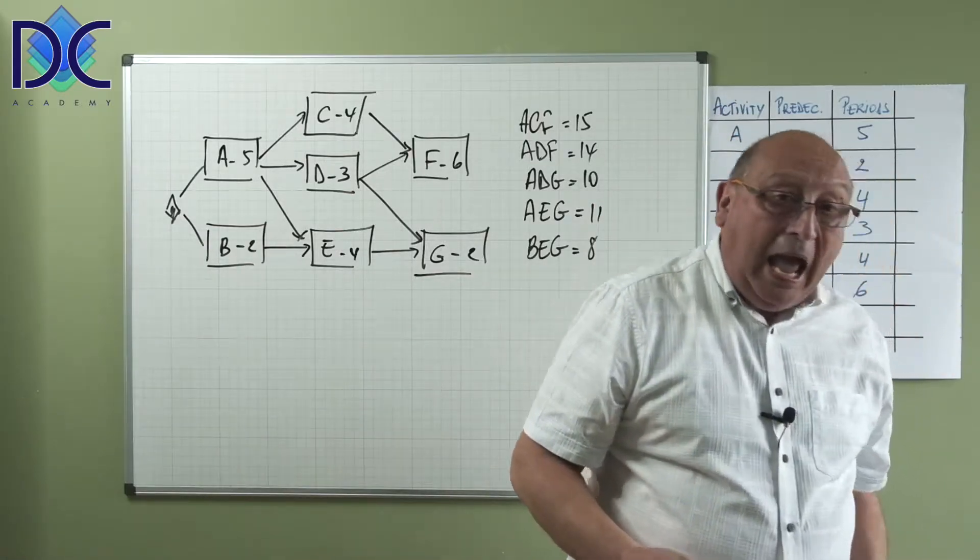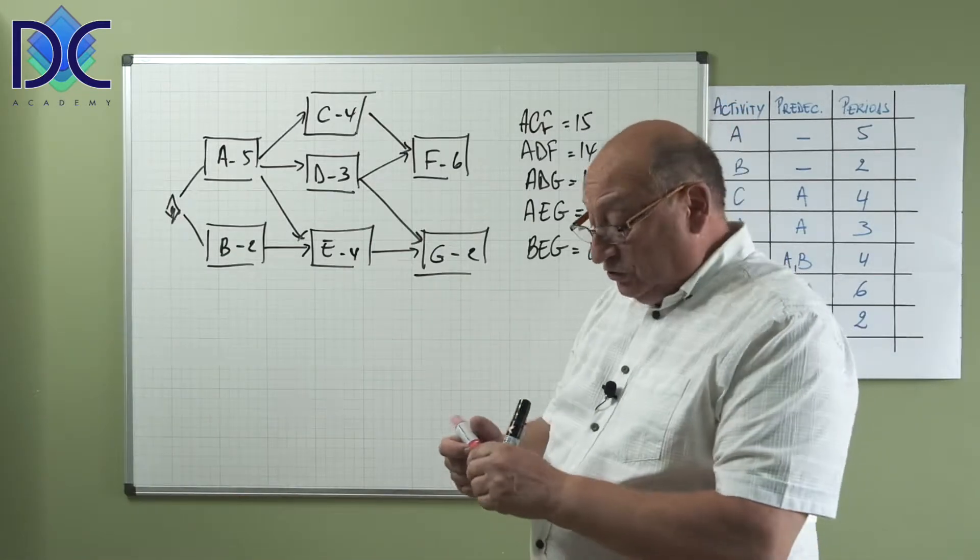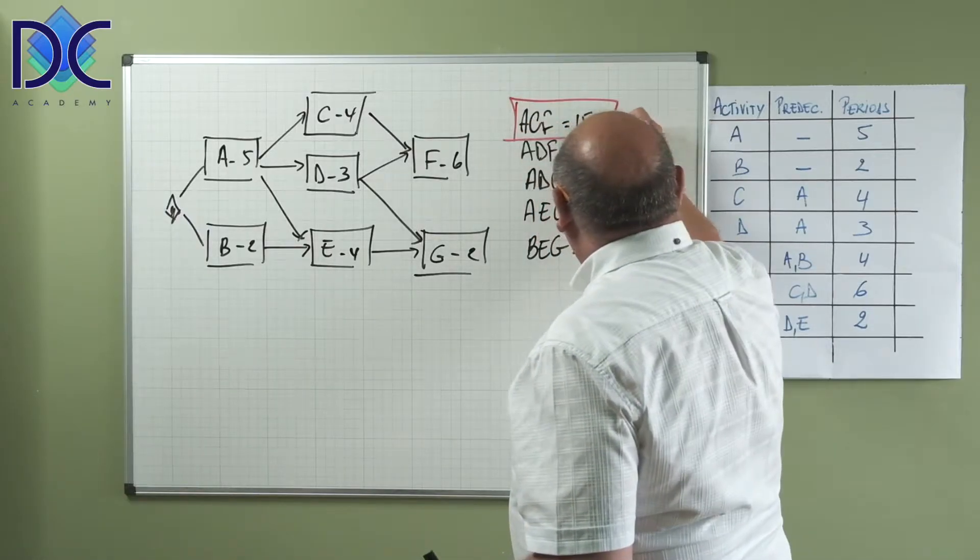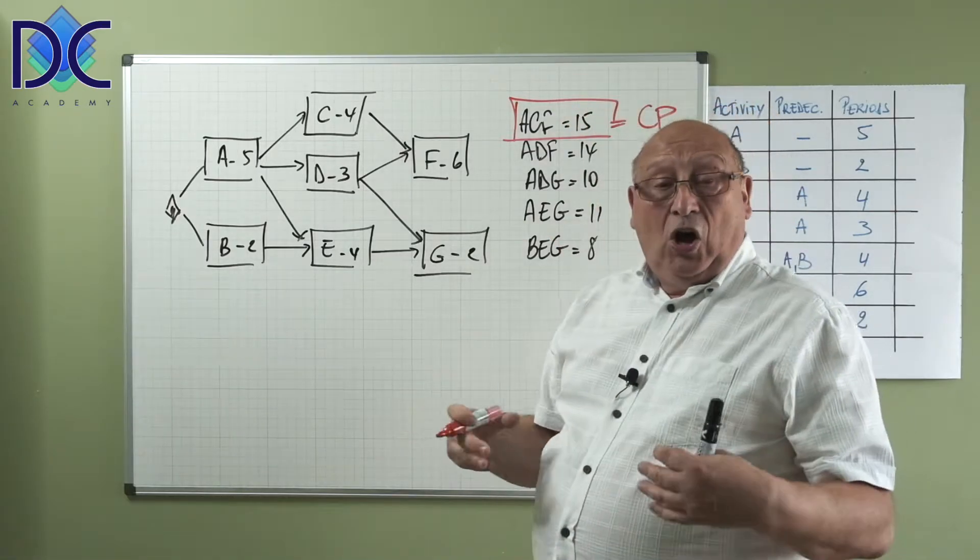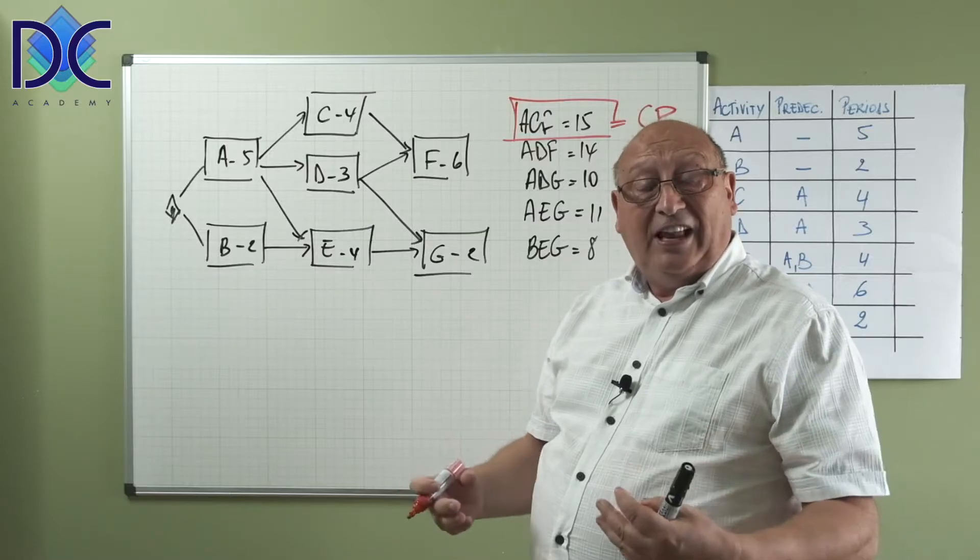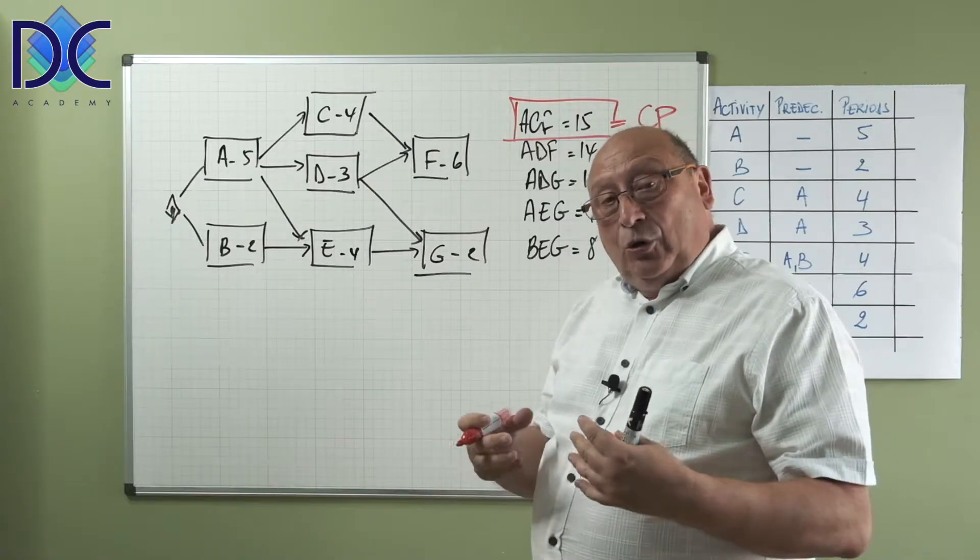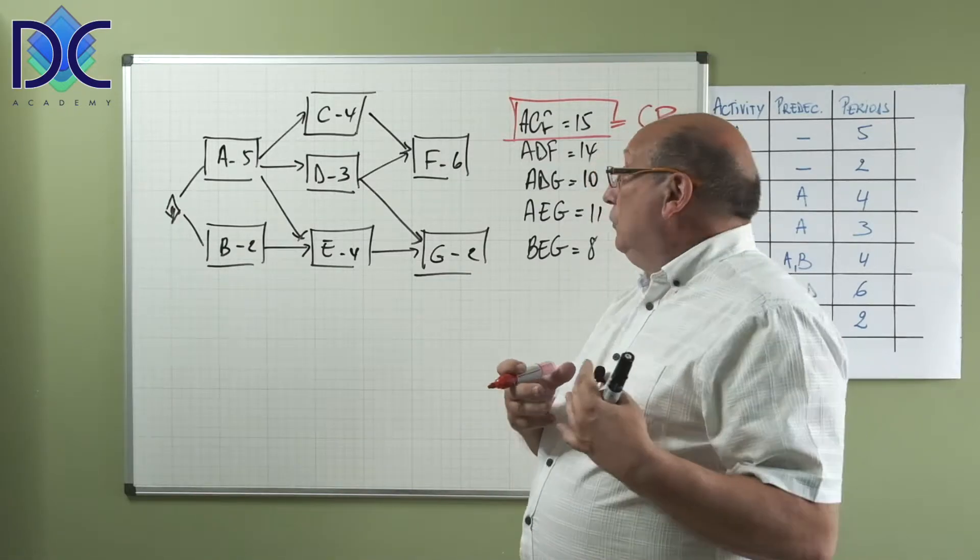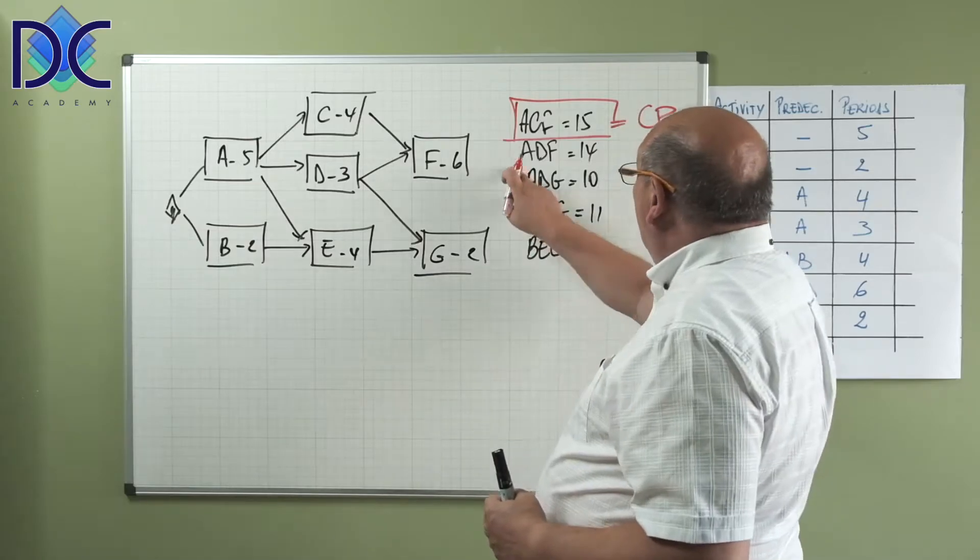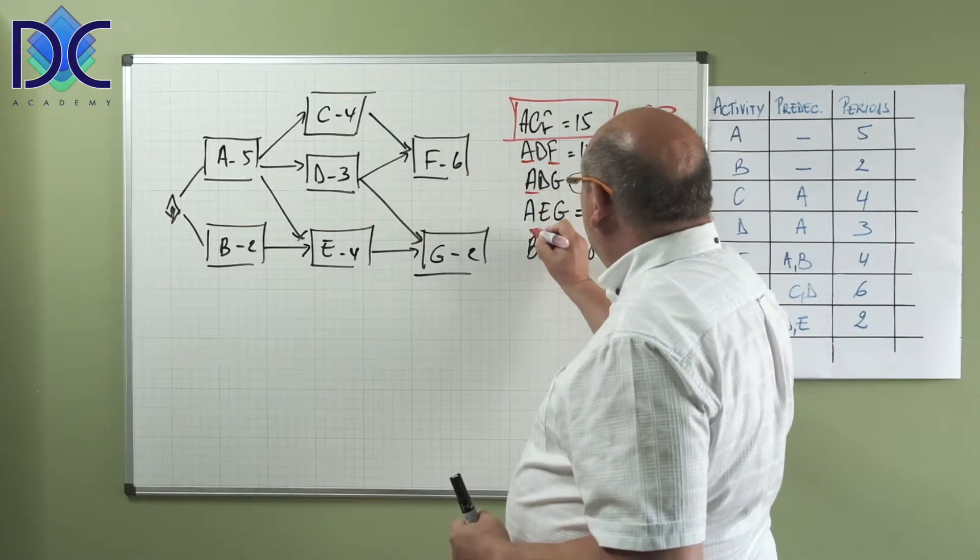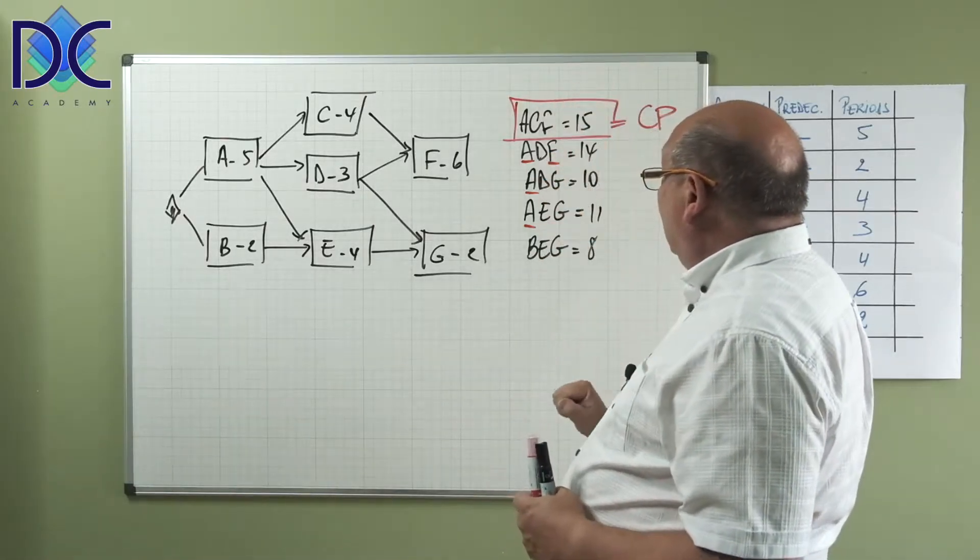The first thing to do is identify the critical path. The critical path is the path which is the longest, so ACF is in fact the CP. A, C, and F are on the critical path, so their slack is basically zero. They don't have any flexibility. When we talk about slack, we talk about flexibility. We cannot move A, C, or F without changing the duration of the project.